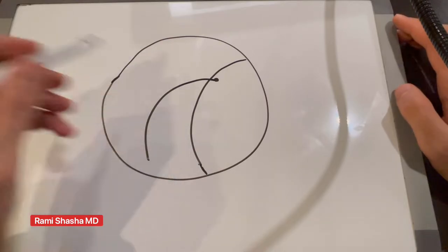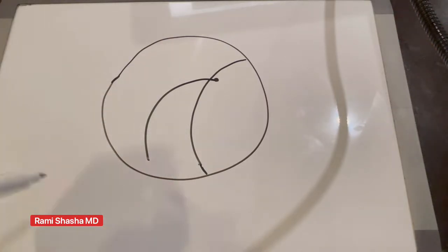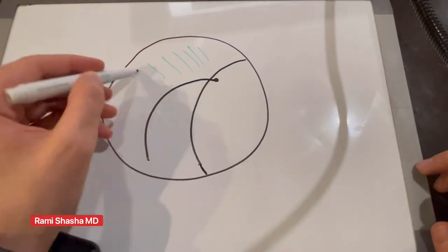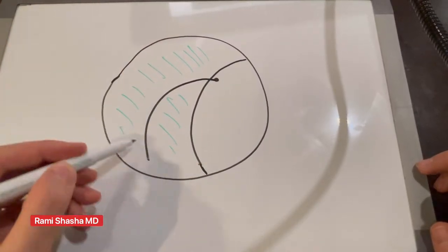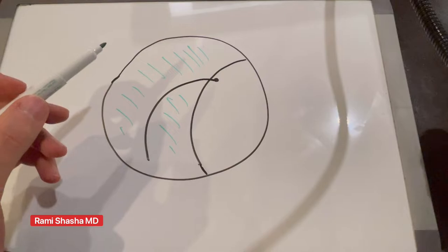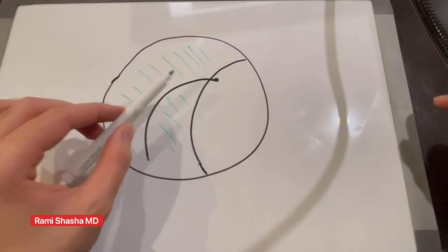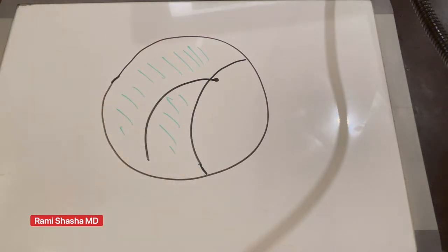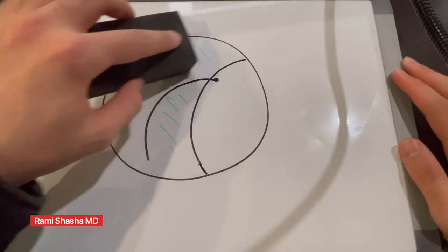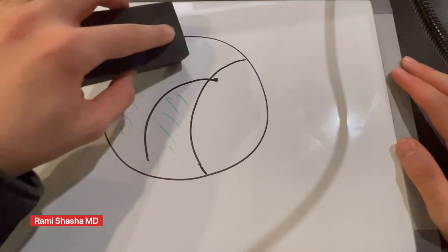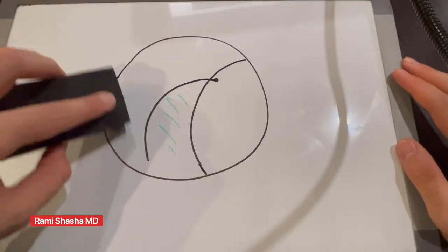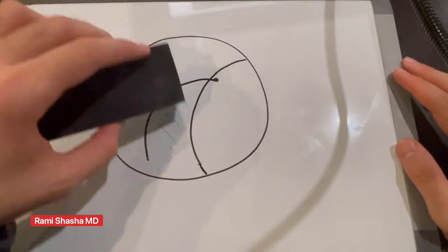When you have vitreous, the vitreous acts as a cushion. If you have a dislocated IOL in the presence of a non-vitrectomized eye, the dislocated lens tends to be more stable. But in scenarios where vitrectomy has already been done, these lenses don't really have much back support.